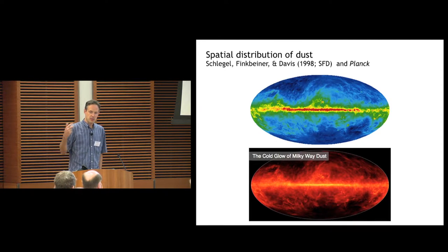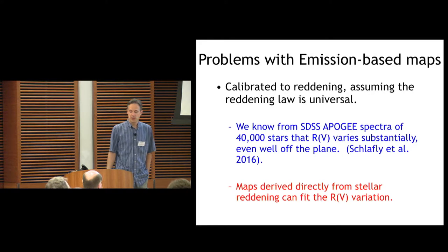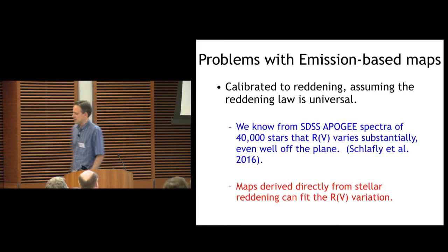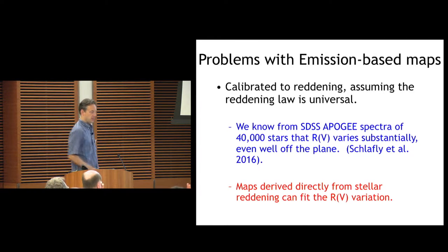If you have dust emission and you want reddening, you have to assume the reddening law is, well you don't have to, but what is commonly done is to assume the reddening law is universal. But we know RV varies. We know that's demonstrably false. I'll say a little more about Schlafly et al. here with the 40,000 Apogee Spectra. So if you derive the maps directly from stellar reddening, you can fit the RV as you do it.